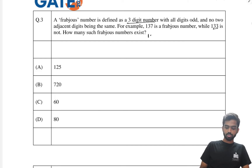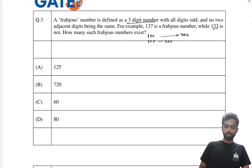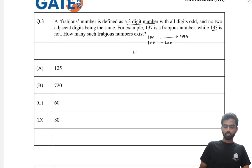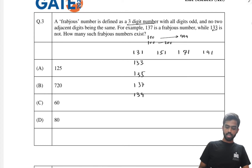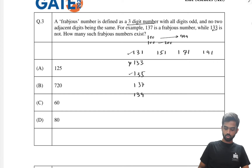Three-digit numbers exist from 100 to 999, and all digits must be odd. Starting from the 100s: 111 doesn't work because 1 and 1 are adjacent. Valid ones starting with 1 are: 131, 151, 171, 191 — and within each, like 131, 133 is invalid. So in the 131 series we get four valid numbers, and similarly for 151, 171, 191 — giving us four each.